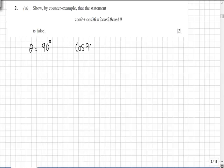So we'd have cos 90 plus cos 390, which is cos 270, equals 2 cos 2θ, which is 180, cos 4θ, which is 360.